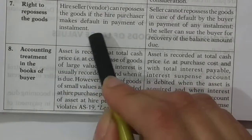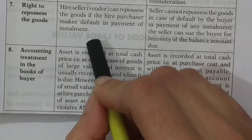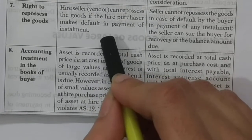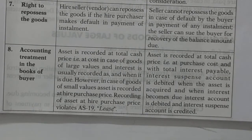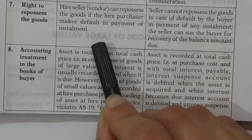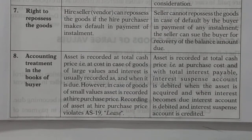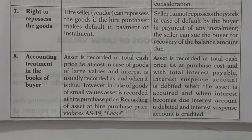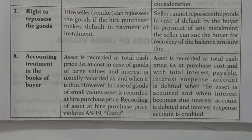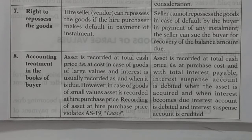Right to repossess the goods: if a hire customer does not complete installment payments, the hire vendor has the right to take back possession of the goods — he can seize and forfeit them. But in the installment purchase system, the seller has no right to take back the goods since the buyer became owner immediately. The seller's only remedy is to file a suit against the buyer — he cannot repossess the goods.